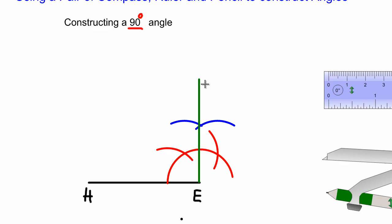And that's my 90 degree angle. So that's how we construct a 90 degree angle at a point. It's that easy guys, bye bye.